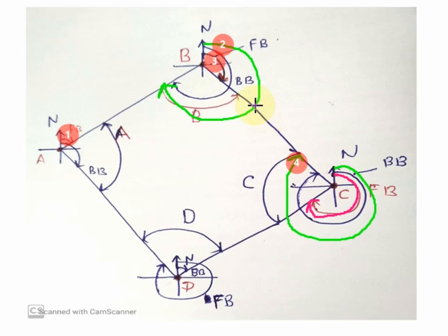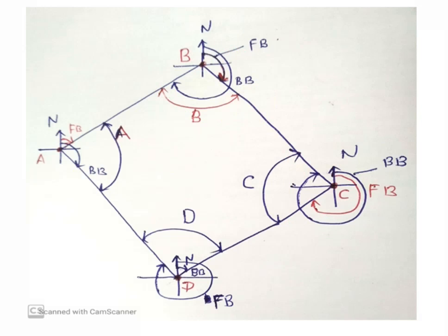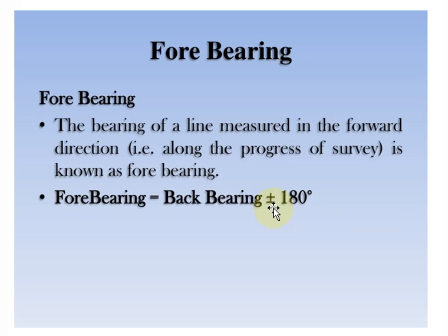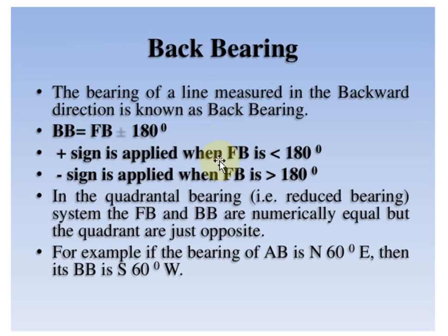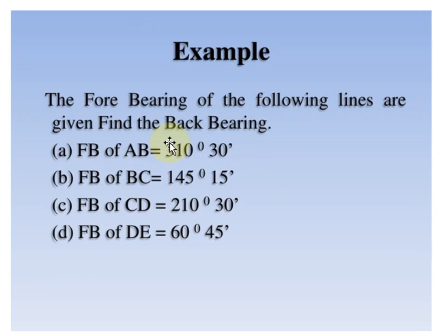As we know, the difference between fore bearing and back bearing is exactly 180 degrees. So fore bearing equals back bearing plus or minus 180 degrees, or back bearing equals fore bearing plus or minus 180 degrees.